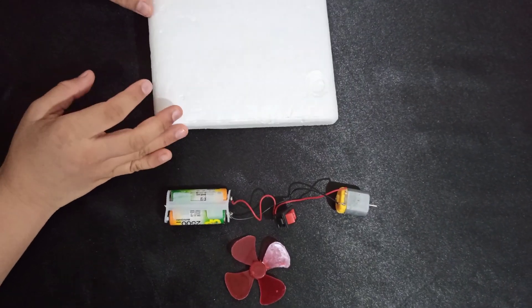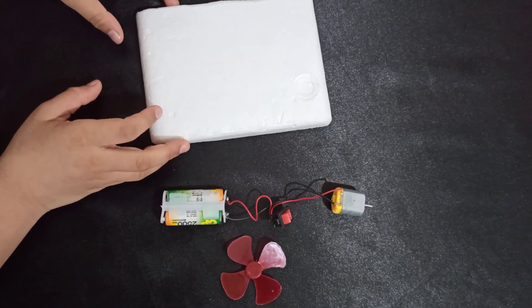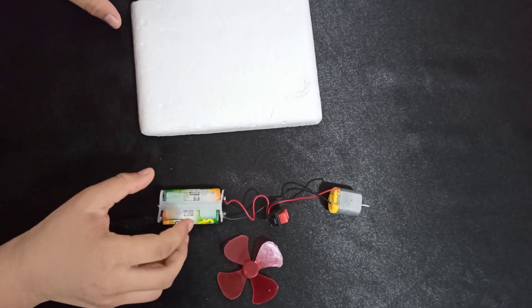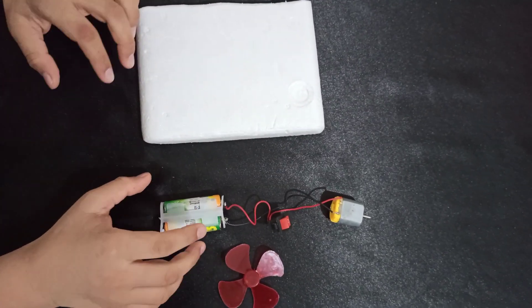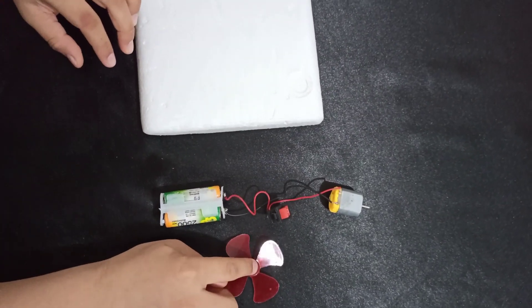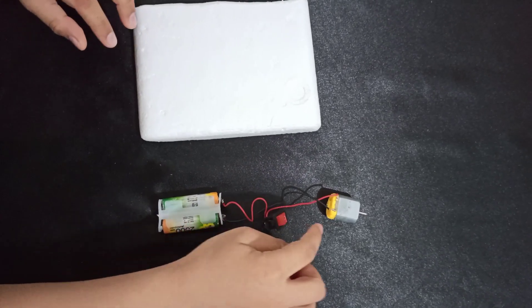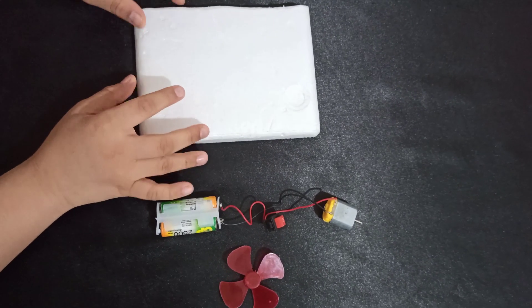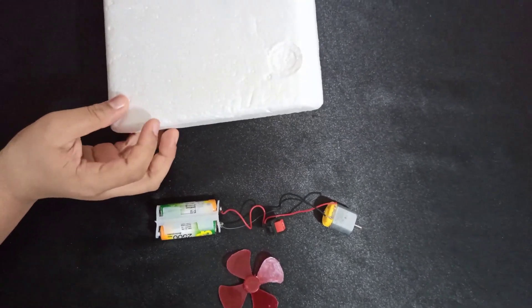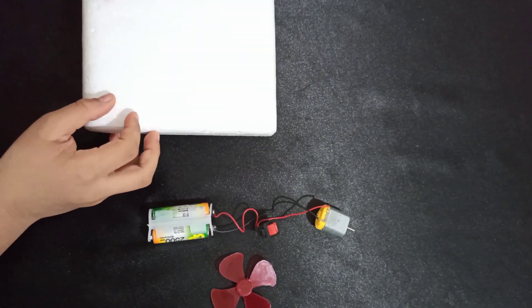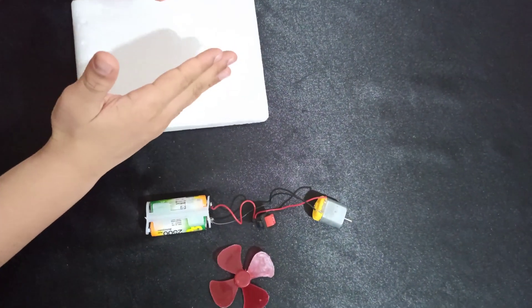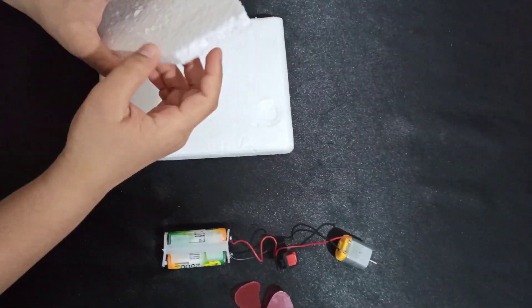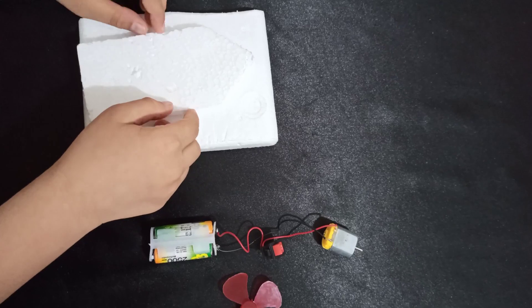The materials you need for this experiment are a thermocol piece, two batteries in the casing, a propeller, a motor, and wires. So first, take your thermocol sheet and cut it into a boat shape like this.